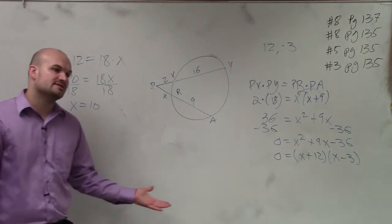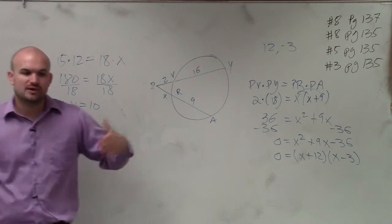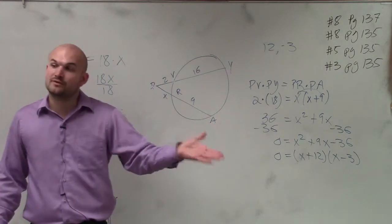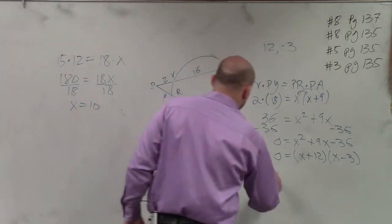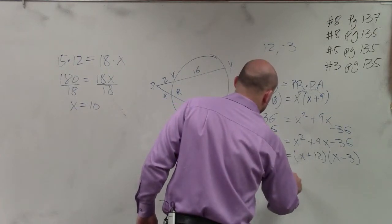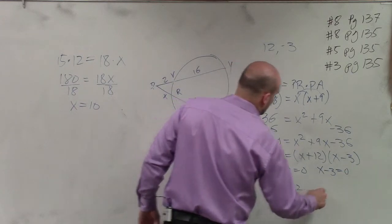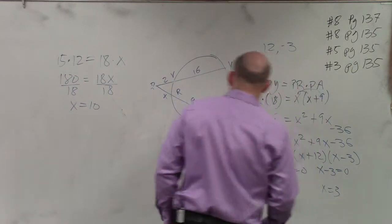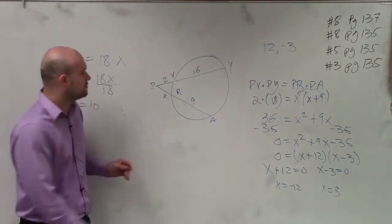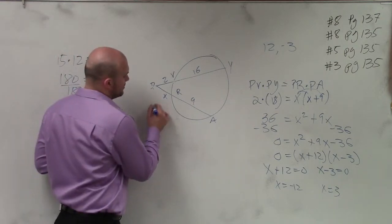And then, since I set it equal to 0, if you have two numbers that are multiplied to give you 0, one of those numbers has to be 0. So therefore, I'll set both equations equal to 0. Therefore, x equals negative 12, x equals 3. OK? Since my length cannot be negative 12, x is going to equal 3.